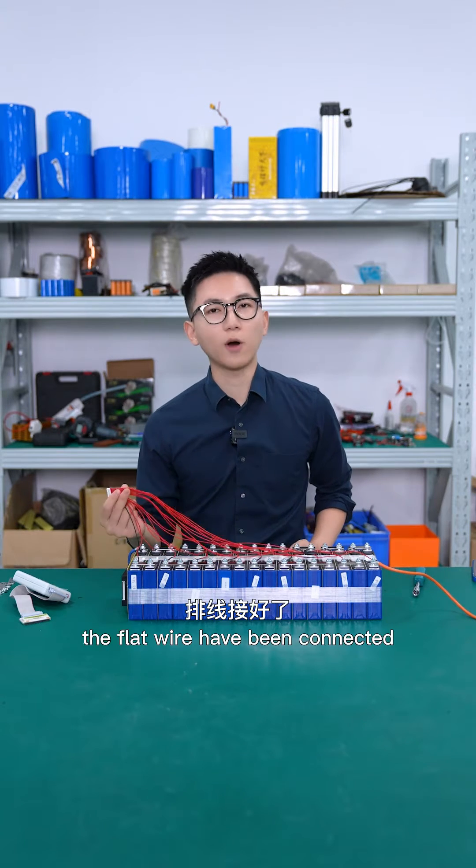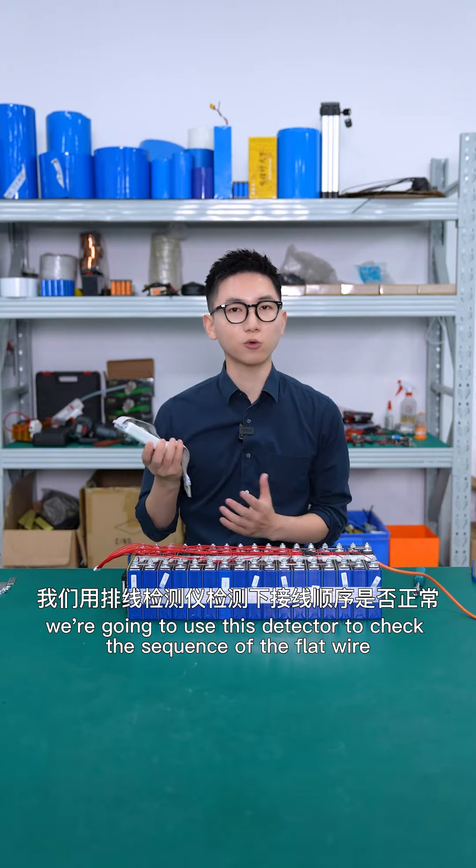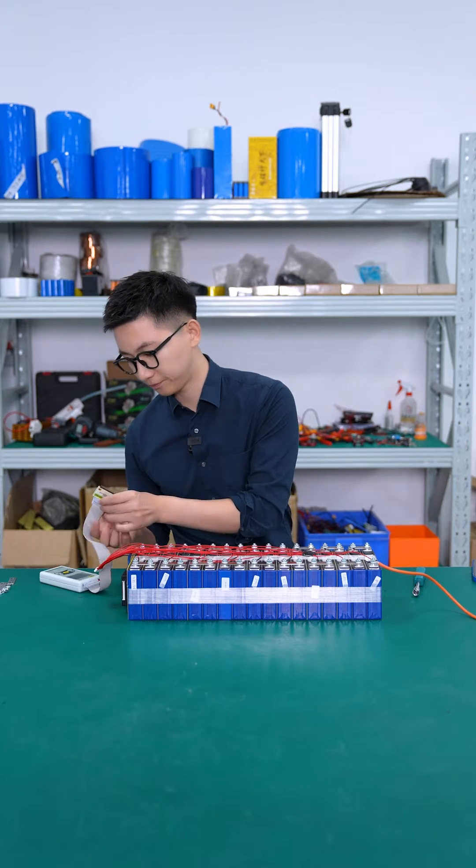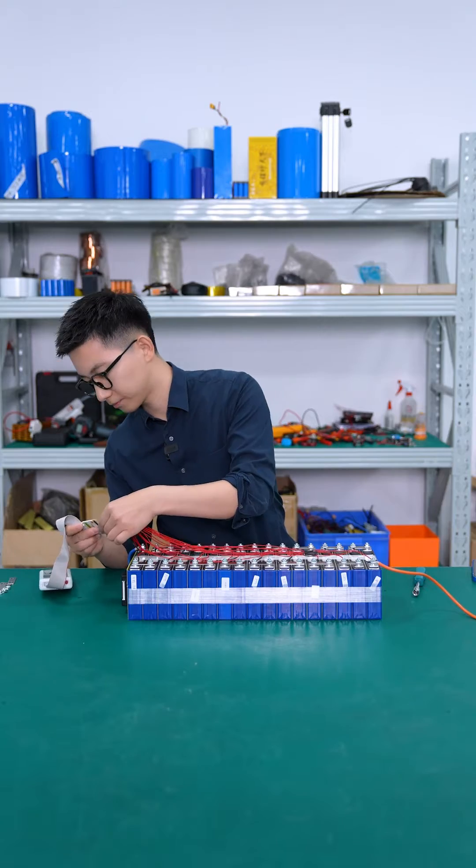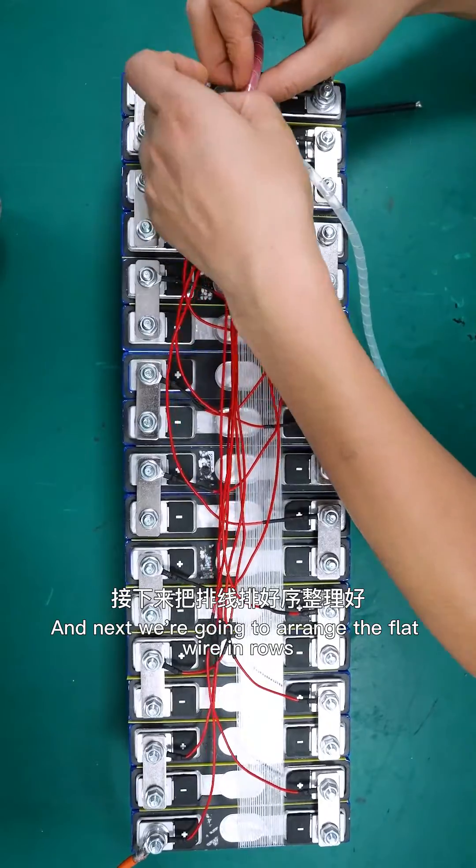Okay, the flat wire has been connected. So next up, we're going to use this detector to check the sequence of the flat wire. So you can see the results. And next we're going to run the flat wire and roll.